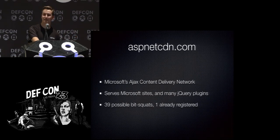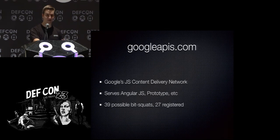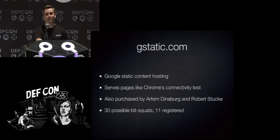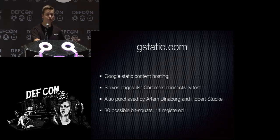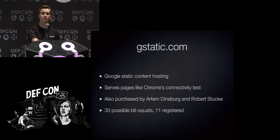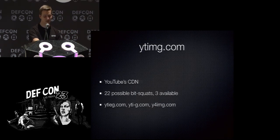SFDC-static.com is the Salesforce CDN — 42 possible bit squats, I bought all of them. ASP.NET CDN: Microsoft's Ajax CDN, serving many Microsoft sites and jQuery plugins — another 38 domains registered. Google APIs: Google's JavaScript CDN — 22 of 39 registered. GStatic.com is Google's static content hosting: it serves the Chrome internet connectivity test, the Chromecast login page, and more. Interestingly, this was purchased by both Artem and Robert Stuckey in their research yet remained freely available, not purchased by Google. I grabbed 19 of 30 possible bit squats. Finally: Facebook CDN, YouTube CDN, and Twitter CDN.